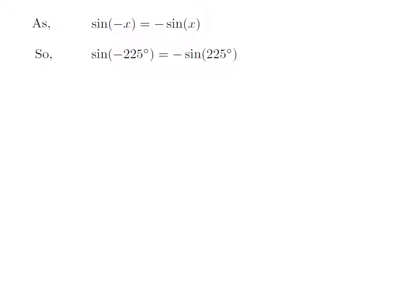Let us apply the above identity for sine of minus 225 degrees. Here, x is 225 degrees. So, sine of minus 225 degrees is equal to minus sine of 225 degrees.